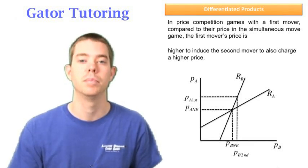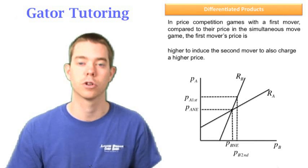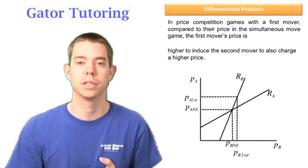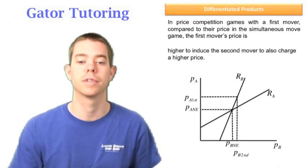That's what you want to take out of this, because it's different from homogeneous products. In homogeneous products, everybody wants to be first mover - first mover has the advantage. But in differentiated products, everybody wants to be second mover, though they're still happy if there is a first mover compared to the simultaneous move game.